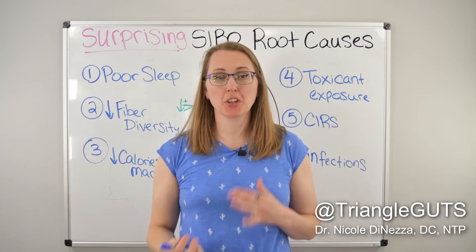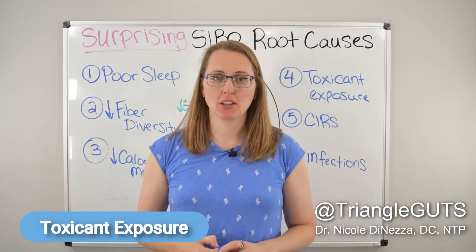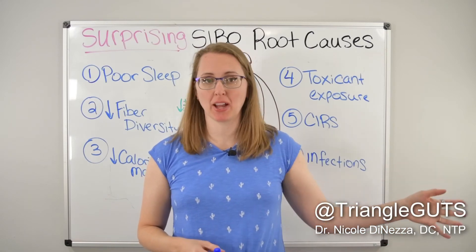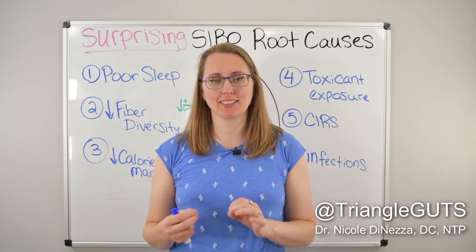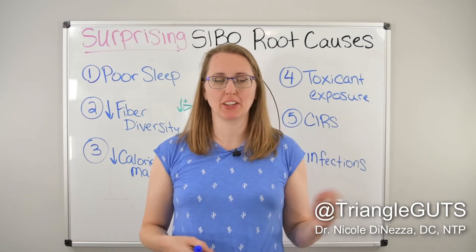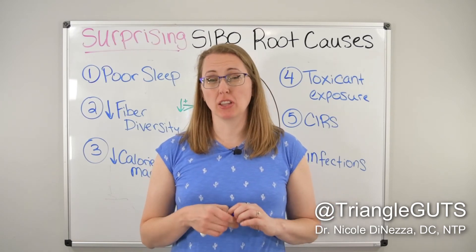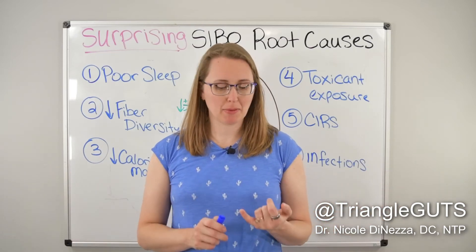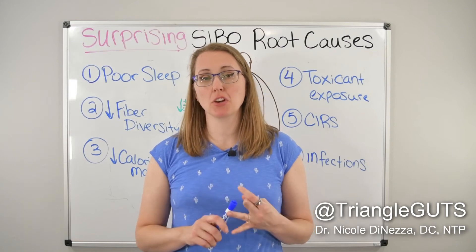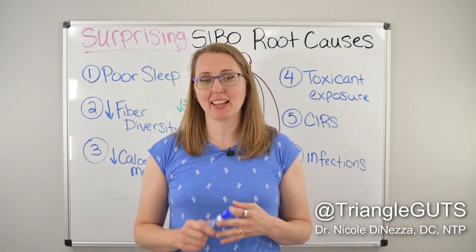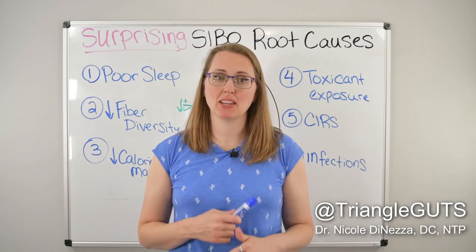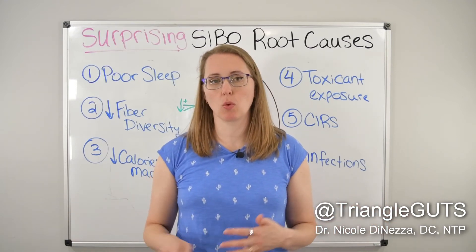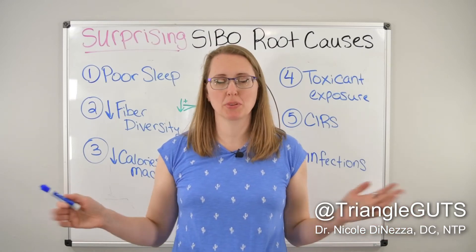Next, I want to talk about toxicant exposure. A toxin is something poisonous that would kill you right away; a toxicant has toxin-like characteristics but won't kill you immediately. We are riddled with them — prime examples include heavy metals, bisphenol (BPA), phthalates, parabens, PCBs, pesticides, and herbicides. They're all over our cosmetics, air, soil, and water. I've only seen this clearly cause SIBO a few times in my opinion, but it's not something to be neglected, especially living in this toxic world.